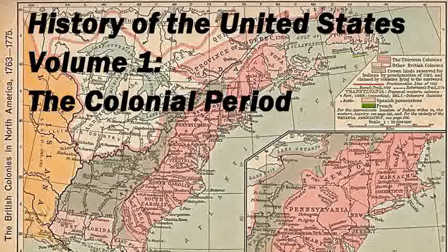As things now stand, the course of instruction in American history in our public schools embraces three distinct treatments of the subject. Three separate books are used. First, there is the primary book, which is usually a very condensed narrative with emphasis on biographies and anecdotes. Second, there is the advanced text for the seventh or eighth grade, generally speaking, an expansion of the elementary book by the addition of 40 or 50,000 words.